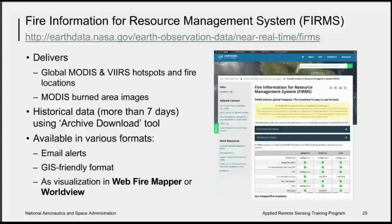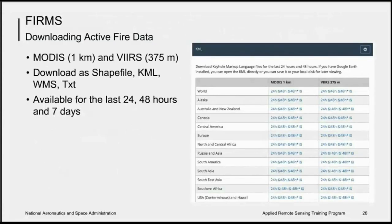MODIS takes daily images of the Earth, but there are gaps in coverage at the equator, so data are available every one to two days. Data older than seven days are available using an active archive download tool. The data are available in various GIS-friendly formats and can be visualized online via the Web Fire Mapper or NASA's WorldView. The one-kilometer MODIS data and the 375-meter VIIRS data can be downloaded in multiple formats including shapefile for ArcGIS or QGIS, or KML for Google Earth. You can download data for the last 24 or 48 hours, the last seven days, globally or for large regions you specify.